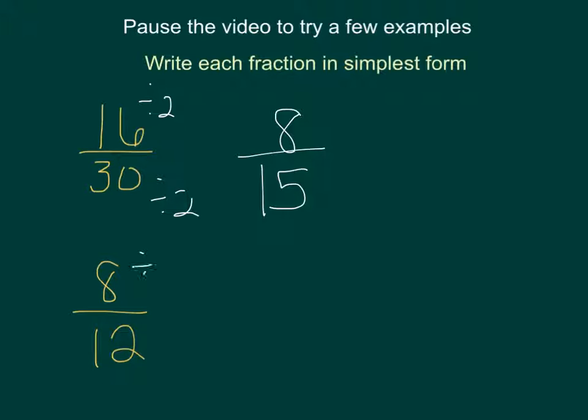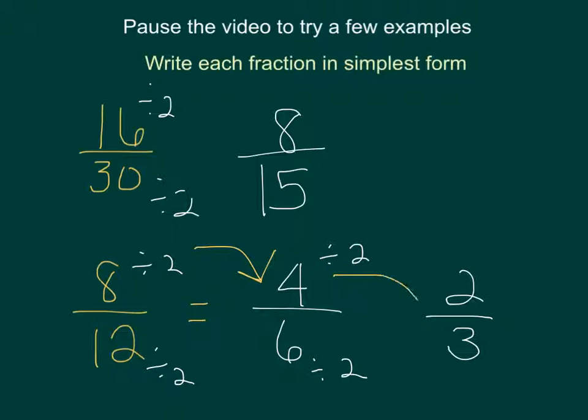For 8 over 12, you could divide both by 2 and get 4 over 6. You could divide by 2 again, which would give you 2 over 3. This is a good example of when you get your fraction, make sure that that fraction is in simplest form. You can see here, we actually went to 4 sixths, and then 4 sixths could be simplified again. You want it to be in its lowest form.